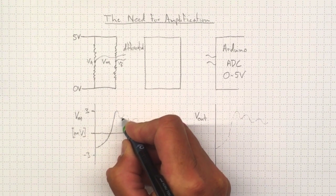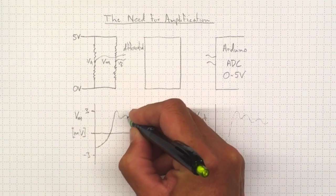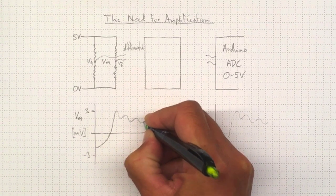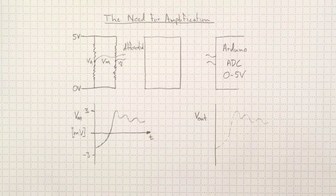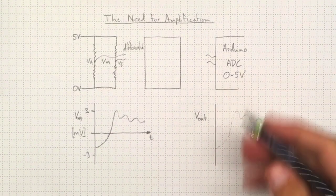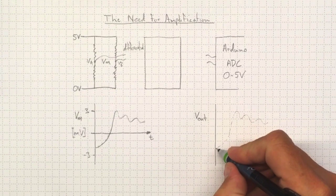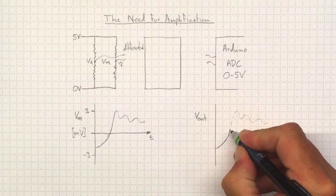...that ranges over a relatively small range. And we need to make it bigger and still retain the same shape so that we can read it on the Arduino. So we'd like to wind up with something like this.